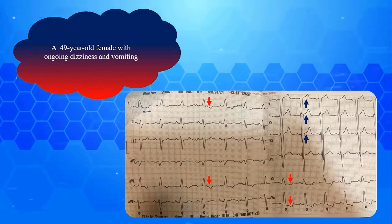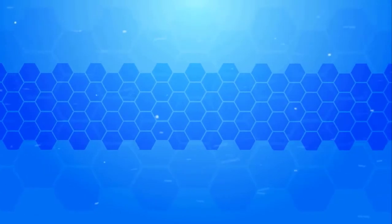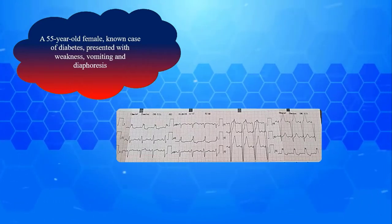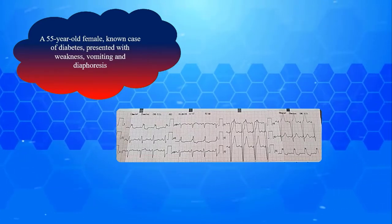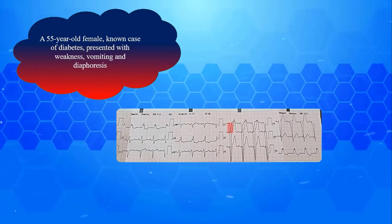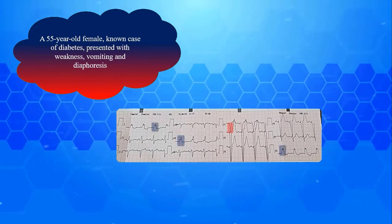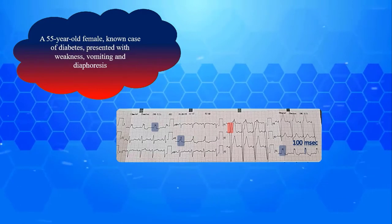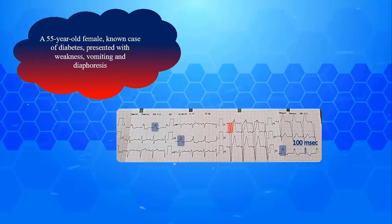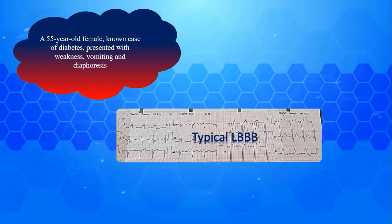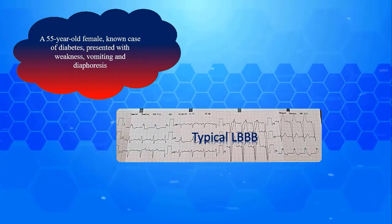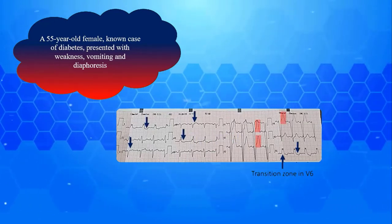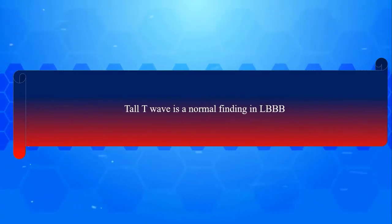Our third strip is from a 55-year-old female, a known case of diabetes, presented with weakness, vomiting, and diaphoresis. Again the QRS complexes are broad with deep S wave in V1 and notched R wave laterally. No septal Q wave is observed in lateral leads. R peak time in V6, D1, and AVL is obviously prolonged at about 100 milliseconds. Therefore this is a typical LBBB. Other associated findings are delayed R wave progression, tall T waves, and secondary STT wave changes. Recall that tall T waves are a normal finding in LBBB.